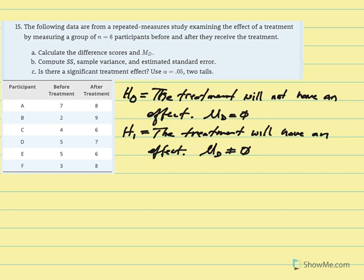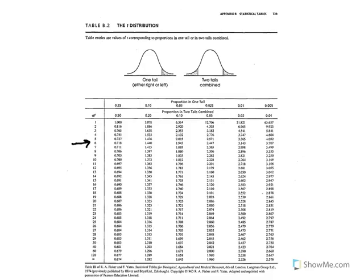Next we should identify what our critical T is equal to based on our degrees of freedom. Degrees of freedom is equal to n minus 1. Our sample size is equal to 6, so 6 minus 1 is equal to 5. We enter our T table using degrees of freedom equal to 5, and our two-tailed test at 0.05 alpha. We find that the critical T value is equal to 2.571.